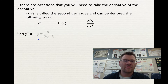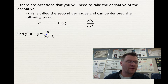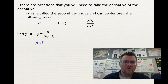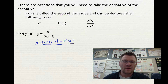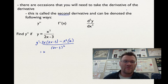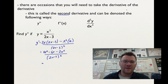We're going to find the second derivative of x squared over 2x minus 3. First, I'm going to use the quotient rule. The quotient rule says take the derivative of the top, multiplied by the bottom, minus the top multiplied by the derivative of the bottom, which is just 2, and then square the bottom. Expanding the top and combining like terms, I get 4x squared minus 6x minus 2x squared all over (2x minus 3) squared, which simplifies to 2x squared minus 6x all over (2x minus 3) squared. That's the first derivative.